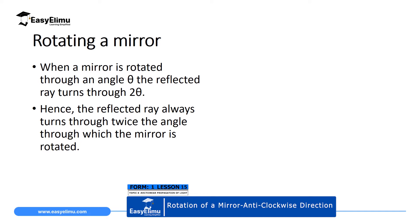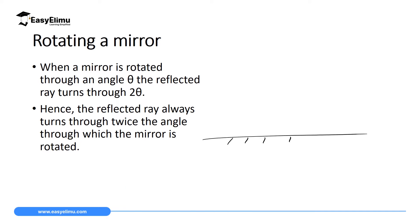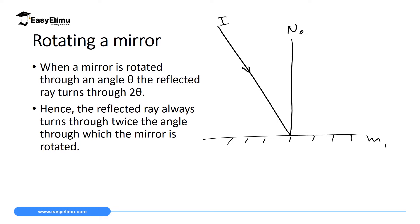So if we have a mirror on a horizontal surface, let's call this mirror one. Mirror one has a normal N-naught, and along this normal we have an incident ray which forms an angle i to the normal. At the point of incidence it will be reflected to form R-naught, which is the reflected ray, and this reflected ray forms an angle r to the normal.